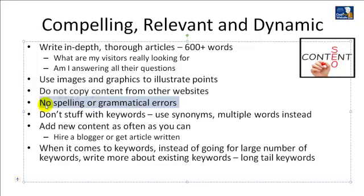Don't stuff your article or content with keywords. Up until around 2011 or 2012, you could stuff a page with keywords and Google would give you bonus points. Do not do that anymore — they will now give you negative points for it, and you will lose authority. Don't mention your main keywords more than twice in a 600-word article. Use synonyms and related terms instead; Google looks for that to determine whether your content is consistent.